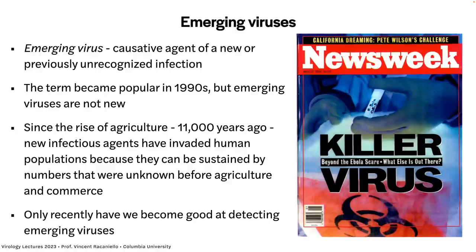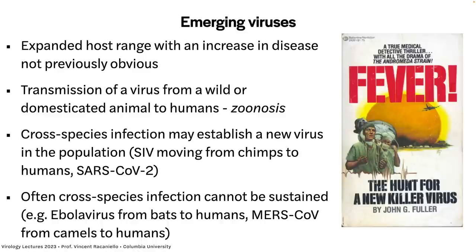An emerging virus could be a virus with an expanded host range that we hadn't seen before. For example, Zika virus had been around since 1947, and suddenly in 2015 it came to Brazil — we hadn't seen it there before, and it was causing microcephaly, which we also hadn't seen before. So that's an emerging virus for Brazil, but we already knew about the virus. It doesn't have to be a new virus, or it can be a new virus.